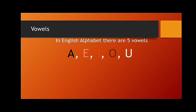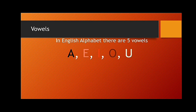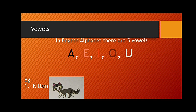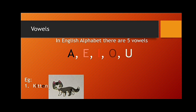A, E, I, O, and U. For example, the first word is kitten. In this word, the letters I and E are the vowels.